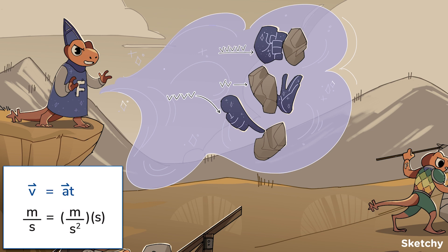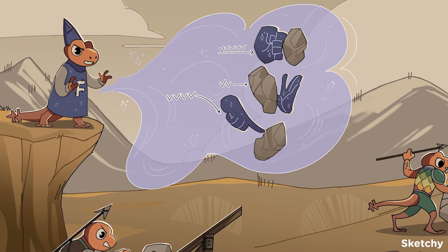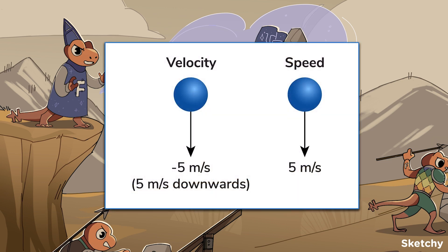Velocity is how far something travels each unit of time — for example, how many miles it travels per hour, or how many fathoms per fortnight, or how many meters per second. Its SI unit is meters per second. You also might run into the non-vector, or scalar cousin of velocity, which is called speed. Speed is also measured in meters per second, so if speed has the same units as velocity, why is it a different thing? Well, speed is just the rate an object moves, while velocity is the rate and direction. In other words, speed doesn't care what direction an object moves, only how fast it moves. The value of speed will always be positive — that's how scalar quantities work.